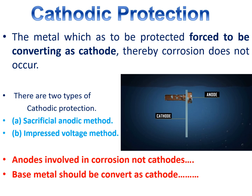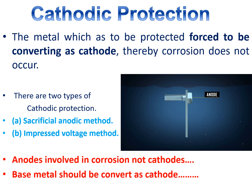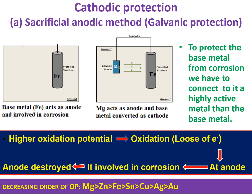There are two ways to convert anodes to cathodes by cathodic protection: one is the sacrificial anodic method, and another is the impressed voltage method. You can see in the figure there is an anodic part and a cathodic part — the anodic part is always involved in corrosion and oxidation. Let's see the first method: the sacrificial anodic method.